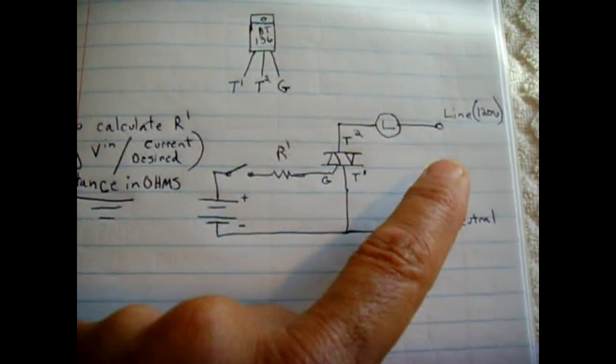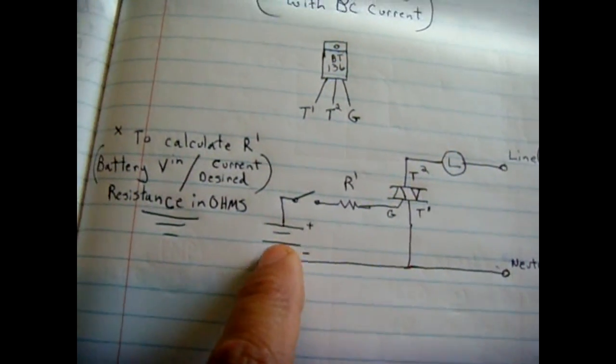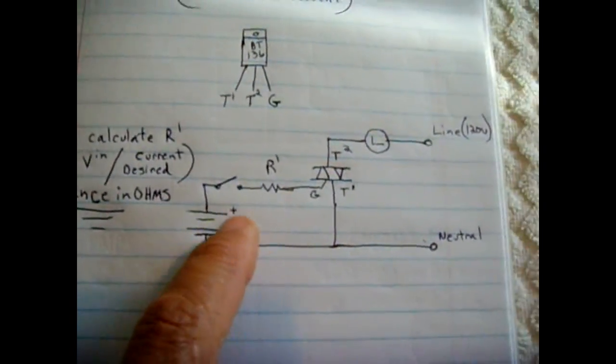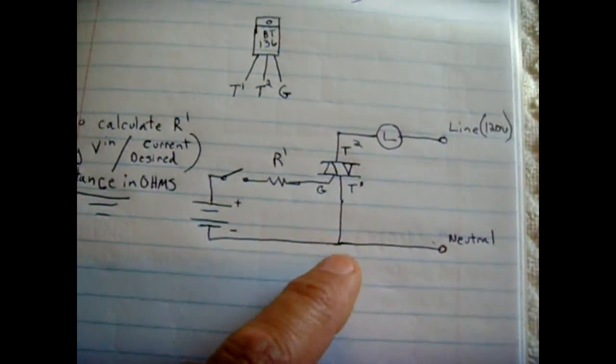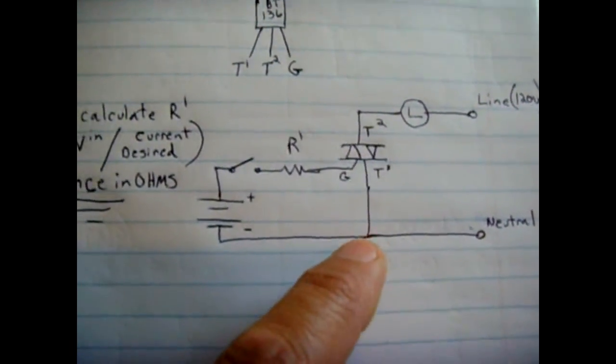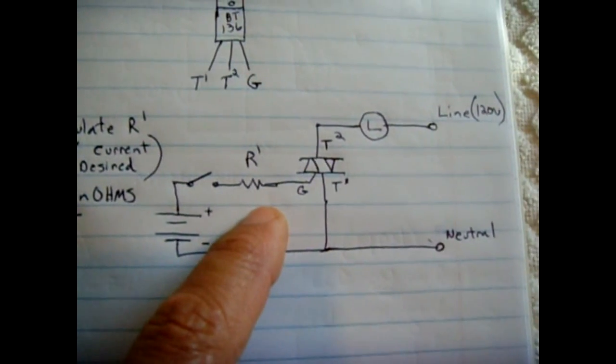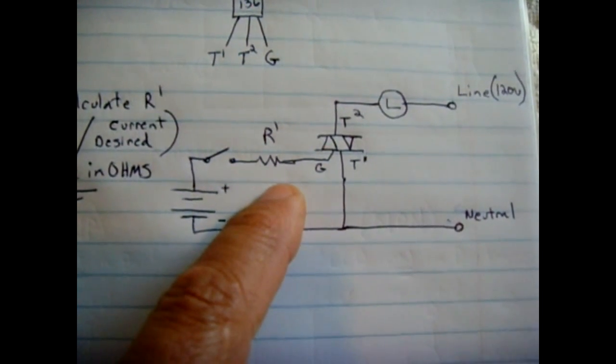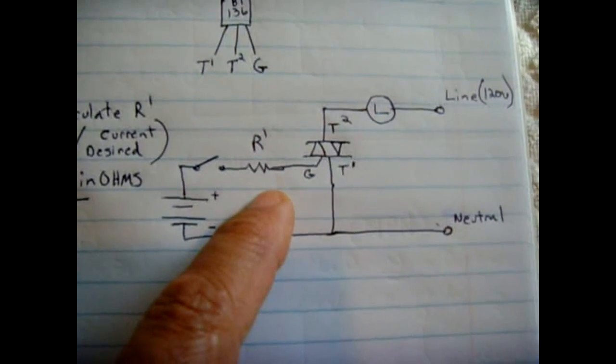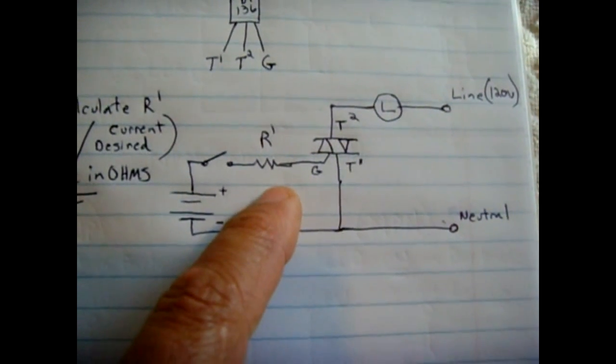You could just trigger it all from AC, but there's a lot of times when you're gonna want to trigger it with DC. Say you come up with a circuit that runs on DC and you want to trigger something on AC—this is perfect for that.